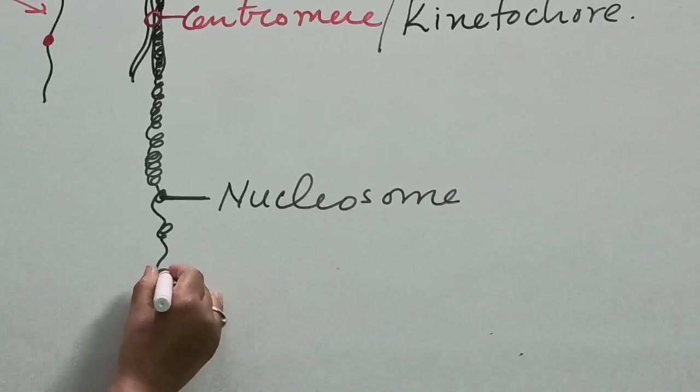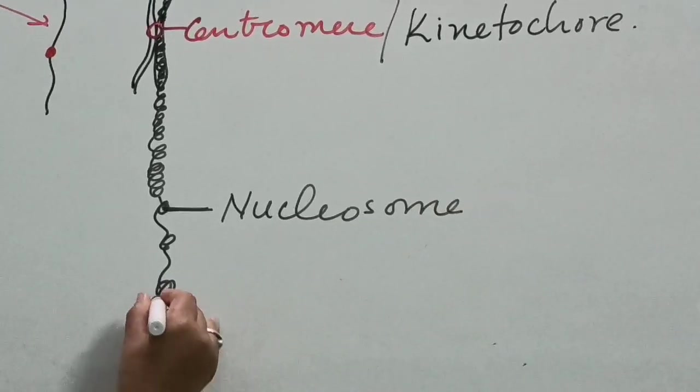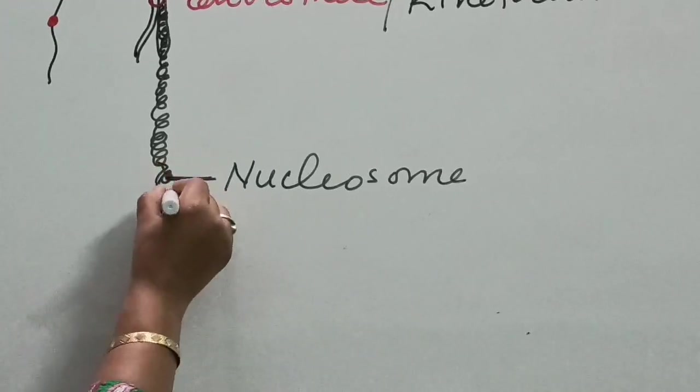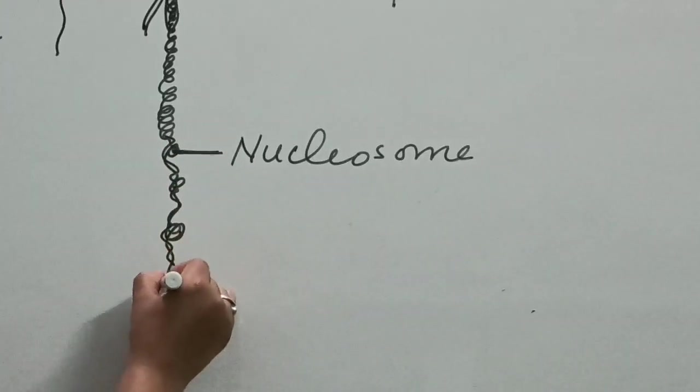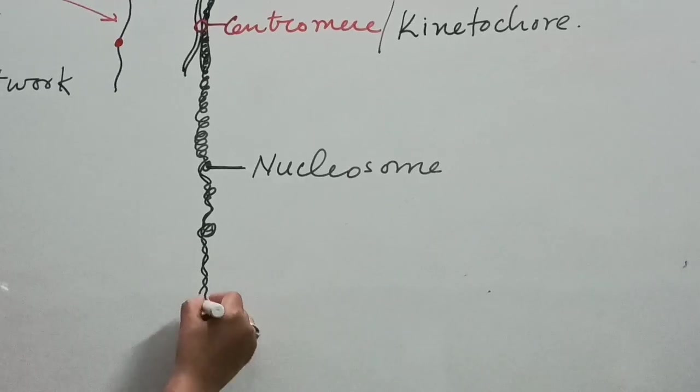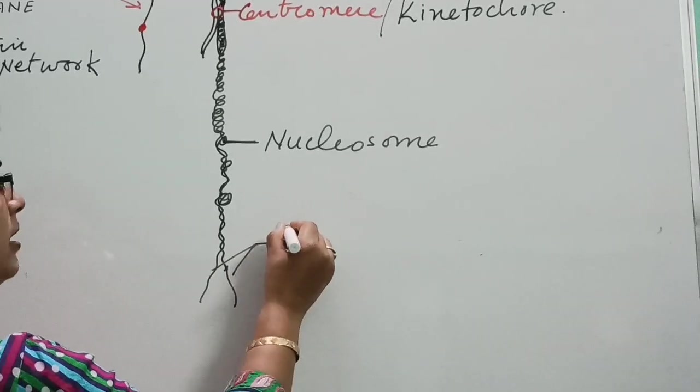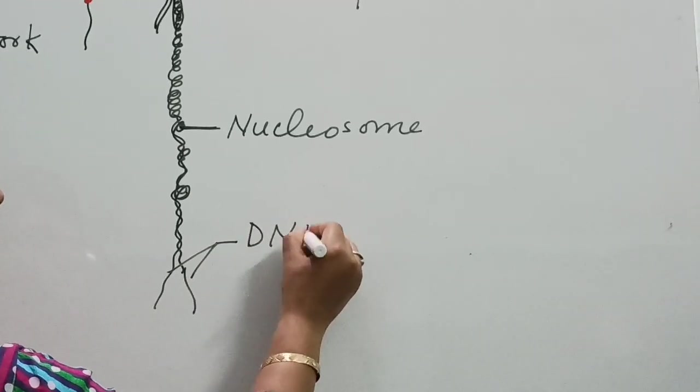And again, the thread which makes a round over the nucleosome is made up of two thread-like structures and it is termed as DNA.